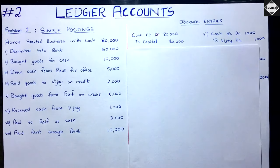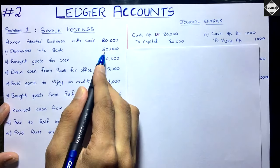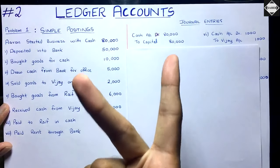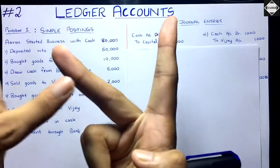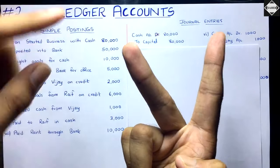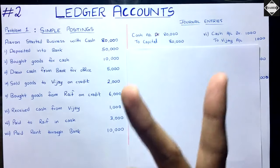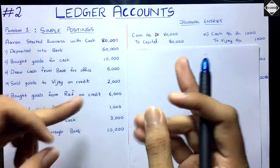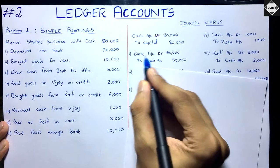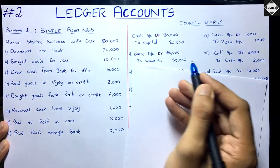Next transaction: deposited into bank 50,000. Two accounts are affected — cash account and bank account. Bank account is increasing because you deposited cash into it, and cash account is decreasing. So the entry is: Bank Account debit, to Cash Account 50,000. Bank account is an asset that has been increased so you debit it, and cash is decreasing so you credit it.